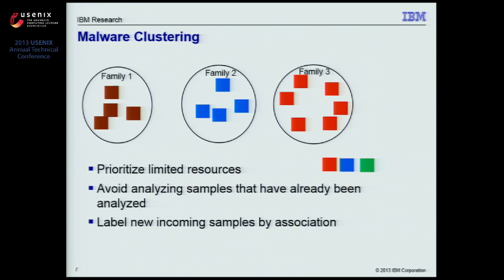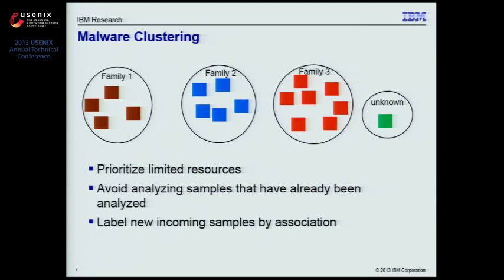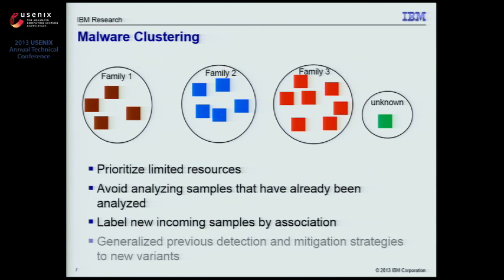In addition, with malware clusters, labels for new incoming samples can be determined by their association with existing families. And last but not least, previous detection and mitigation strategies can be generalized to new variants if they belong to an existing family that has already been analyzed.